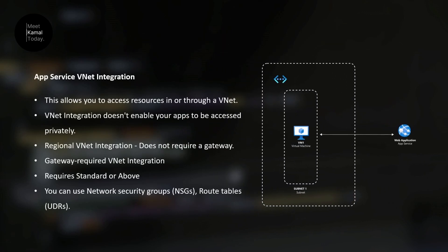There are a few things you should know when you do this app service VNet integration. This allows you to access resources in or through a VNet, but this VNet integration does not make your web application a private one. It is still a public web application. If you want to go fully private, you can try something like app service environment. There are two types of virtual network integrations: regional VNet integration and gateway-required VNet integration.